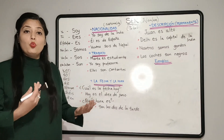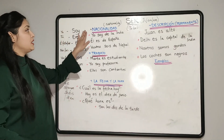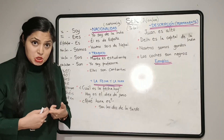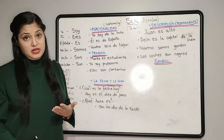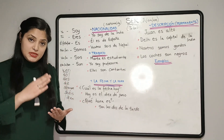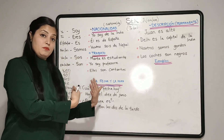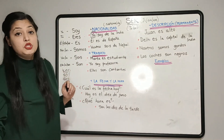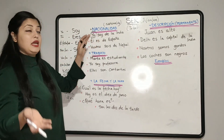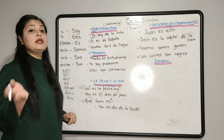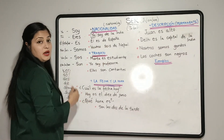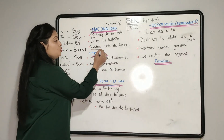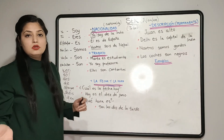Now you must be wondering: where do I use the verb 'ser'? The verb 'ser' is used to describe 'la nacionalidad' — nacionalidad means nationality. So whenever I'm talking about the nationality or origin of any person or subject, we always use the verb 'ser'. For example, if I want to say 'I am from India', I will say 'yo soy de la India'. 'Yo' is completely optional — 'soy' in itself means 'I am'. If I want to say 'he is from Spain', it becomes 'él es de España'. Or if I want to say 'you all are from Nepal', it becomes 'vosotros sois de Nepal'. The use of 'vosotros' is also optional.